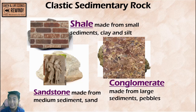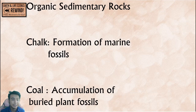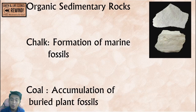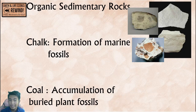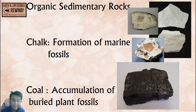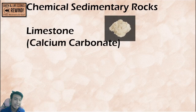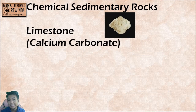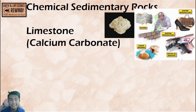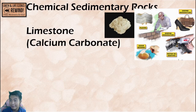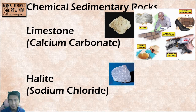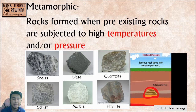Conglomerate can be used as building material like shale. Examples of organic sedimentary rocks include chalk, or calcium carbonate, formed when marine fossils are weathered down into small bits. Coal is an accumulation of buried plant fossils — the coal we use for fuel was compacted plants and organic matter. Chemical sedimentary rocks include limestone, which can also be chemical due to its definite chemical composition; calcium carbonate is used in sugar refining, construction, and manufacturing. Another example is halite, or rock salt — sodium chloride.